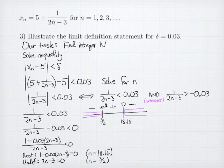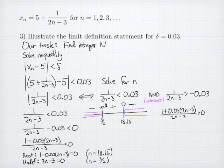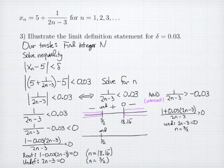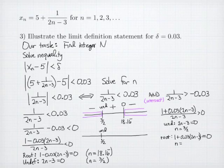And so I have two parts to the first inequality. The first inequality has two pieces. If I solve the second inequality, finding a common denominator and adding it to the other side, I get the quantity 1 plus 0.03 times 2n minus 3, all over 2n minus 3, is greater than 0. This inequality, again, has a discontinuity at 3 halves. And it also has a root where the numerator equals 0, which, when we solve it, is that n equals negative 15 and a sixth.